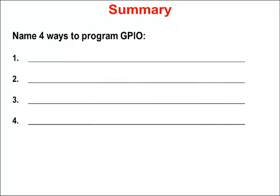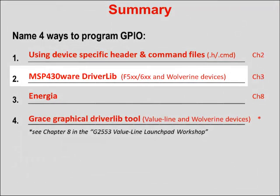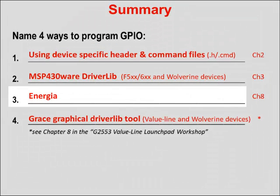Looking at GPIO, the different ways to program it include using specific device header files and linker command files, which we looked at in the Code Composer Studio chapter. In this chapter, we're going to look at driver library. A third solution is Energia — the Arduino port for MSP430 — which is covered in one of the later workshop chapters, either chapter 8 or chapter 9.